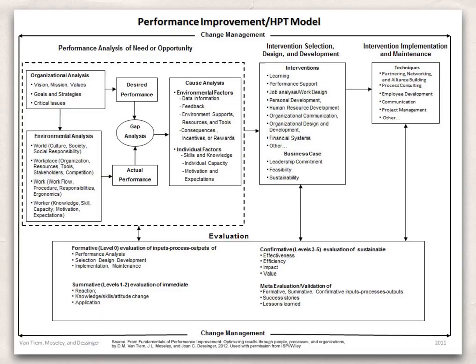Within performance analysis there are actually two components. The first is organizational analysis, which determines what is the desired level of performance that defines what the organization stands for. The other is environmental analysis, to assess current performance levels against the organization's mission, vision, and values. Both organizational and environmental analyses are essential to understanding the gap in performance to be addressed by the performance improvement intervention. Once the gap between desired and actual performance is understood, the third critical piece is cause analysis, to fully understand and document the contributing factors causing the gap.